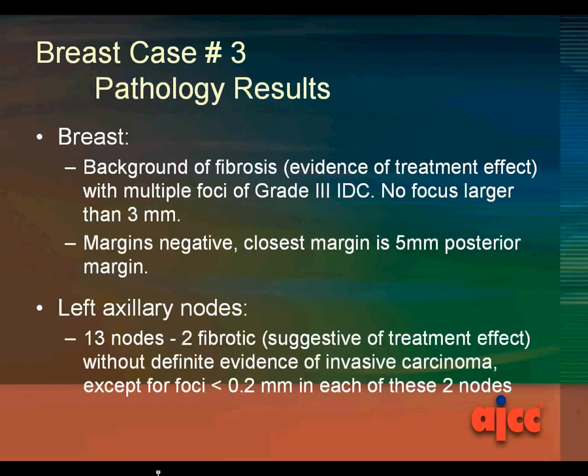The pathology results for the breast show a background of fibrosis and evidence of treatment effect, with multiple foci of grade 3 infiltrating duct carcinoma — no focus larger than 3 millimeters. The margins were negative and the closest margin is 5 millimeters at the posterior margin. For the left axillary nodes: there were 13 nodes, 2 fibrotic and suggestive of treatment effect, without definitive evidence of invasive carcinoma except for a foci less than 0.2 millimeter in each of these two nodes.